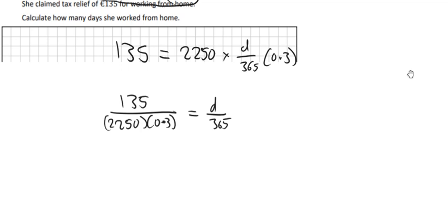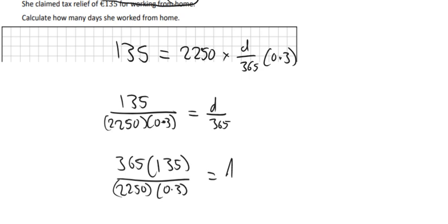And then if you wanted to do it all, you could work out that there on the left-hand side if you want first. Or you could do it on the one go. I could bring over, I can just bring over the 365 now away from the D and multiply it. So we get 365 times 135 on top. And on the bottom we have 2,250 times 0.3. And that should all be equal to D then. And we should get our answer. So we get about 73 days. So she worked 73 days from home. And that's it then. That's all for that question and that's all for that paper.